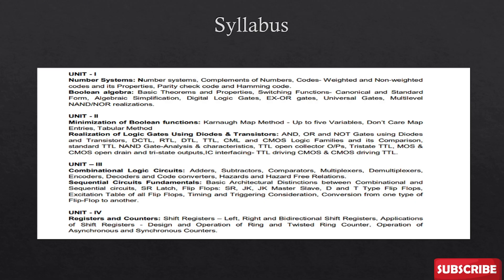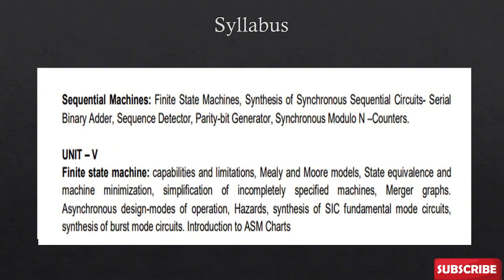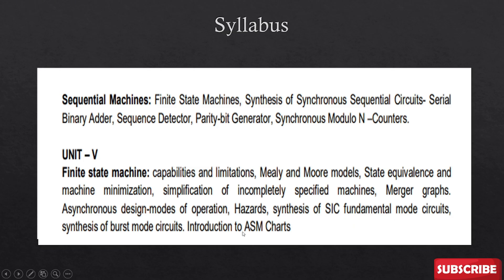In Unit 4, you have shift registers — left, right, bi-directional — and their applications, along with operations of synchronous and asynchronous counters. A question might appear on shift registers or counters. The second compulsory topic is sequential machines, including finite state machines, synthesis of synchronous circuits, serial adder, binary adder, parity bit generator, and synchronous model counters. Unit 5 covers finite state machine capability, limitations, Mealy and Moore models, synthesis of SIC fundamental mode circuits, and ASM charts, which are really important.